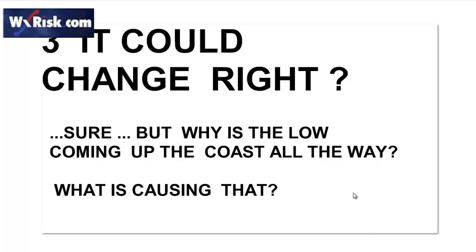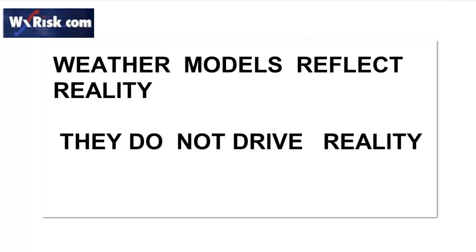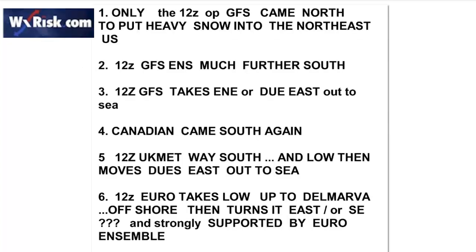Now, this could change — but why is the low not coming all the way up the coast? If you're thinking the models could change and it could come north, you've got to be careful. Remember: weather systems do not move north because the weather model shows them moving north. They move because the weather model reflects the atmosphere — models do not drive the atmosphere. When the weather model is consistently taking systems off the coast, there's a reason for that.